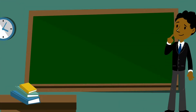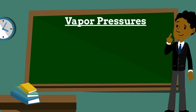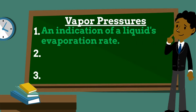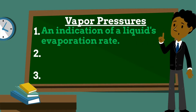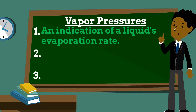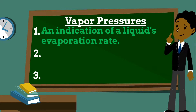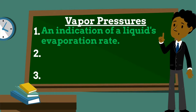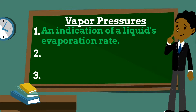Today we'll be talking about vapor pressures. The equilibrium vapor pressure is an indication of a liquid's evaporation rate, and it is defined as the pressure exerted by a vapor in thermodynamic equilibrium with its condensed phases at a given temperature in a closed system.